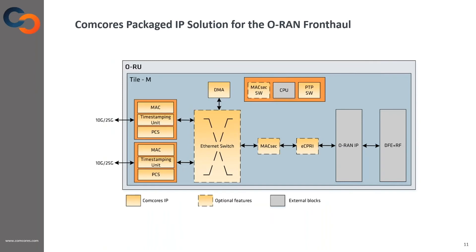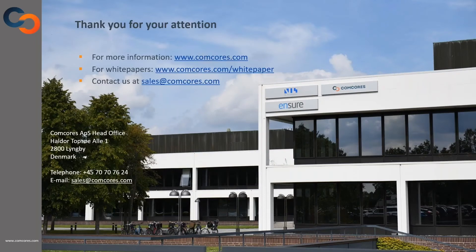ComCourse provides a packaged IP solution for the ORAN fronthaul transport. The packaged IP solution contains Ethernet MAC, PCS, PTP, and DMA IPs by default, and can optionally be extended with eCPRI, MagSec, and Ethernet Switch. All the IPs are also available individually. For more information, we invite you to read our white papers on MagSec and visit our website to access all our products. Thank you very much for your attention.